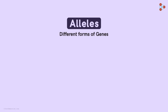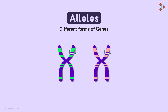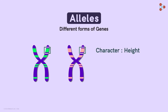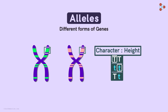Let's take a simple example to understand this. Assume we have two chromosomes with genes for the character height. We can have either both capital TT, both lowercase tt, or one capital T and one lowercase t as the gene set. Here, the individual T or t — that is, the single gene — is nothing but the allele. The alternative form, either dominant or recessive, is called an allele.